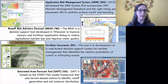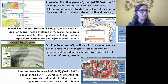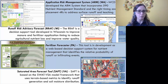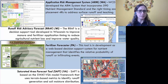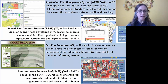We're going to hear about all four tools today. First is the Application Risk Management system created out of Washington — a real-time manure spreading advisory along with a field worksheet. Second is the Runoff Risk Advisory Forecast created out of Wisconsin — a decision support tool providing a visual runoff advisory with information on timing.